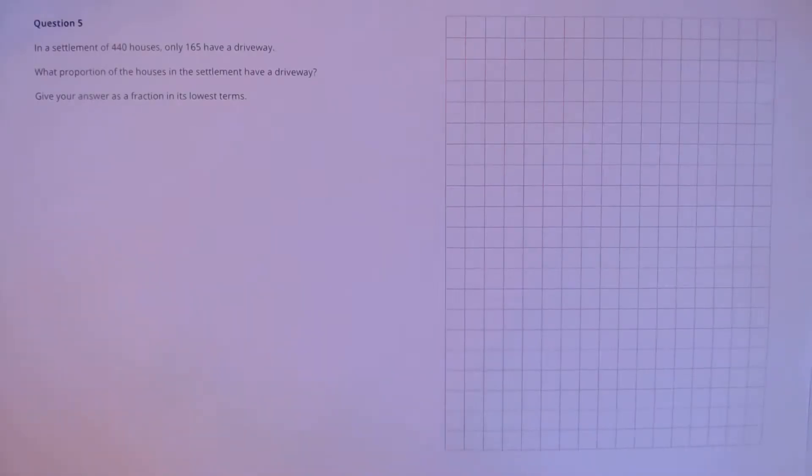Question 5. In a settlement of 440 houses, only 165 have a driveway. What proportion of the houses in the settlement have a driveway? Give your answer as a fraction in its lowest terms.